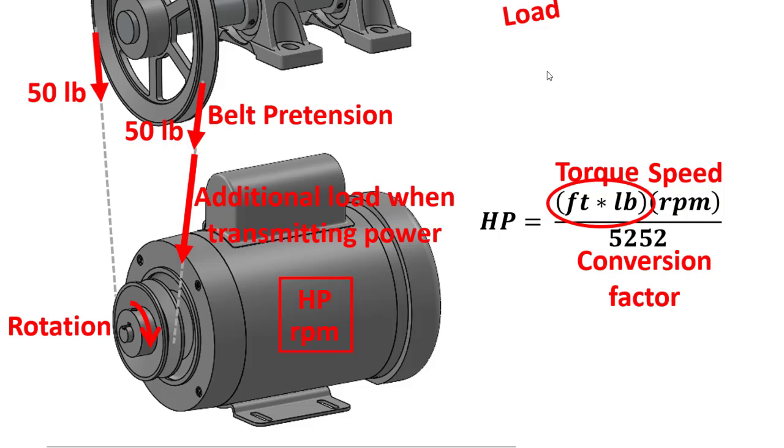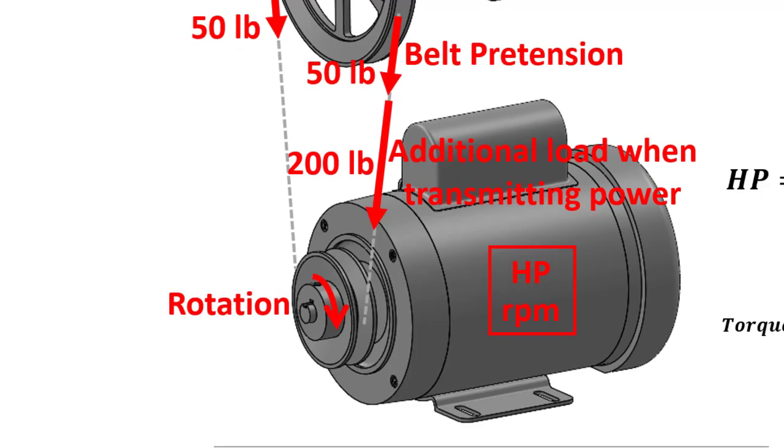we can recall that torque is simply a force times the distance, or in other words, the tension developed in the belt times the radius of the pulley. Since we know the torque and the pulley radius, we can solve for the belt tension needed to transmit the power. Let's suppose in this circumstance that the tension turns out to be 200 pounds.